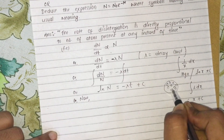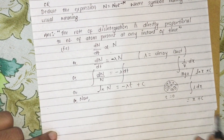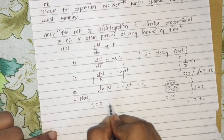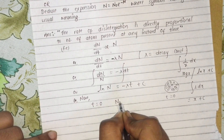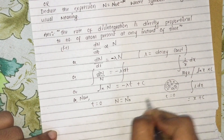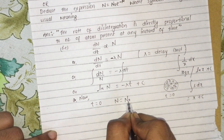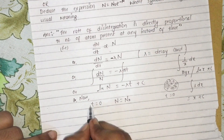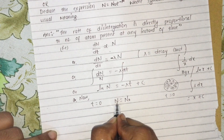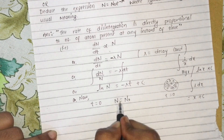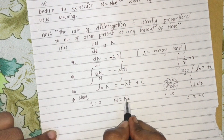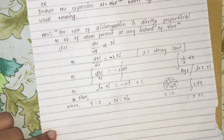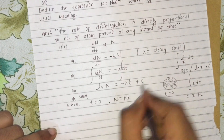Applying the boundary condition: at time t equals 0, the number of atoms is N-naught (the initial number of atoms). Substituting t equals 0 into the equation log N equals minus lambda t plus C.